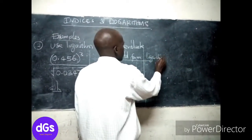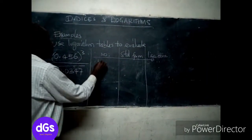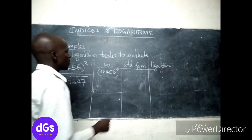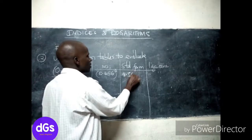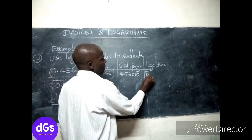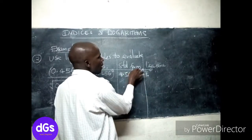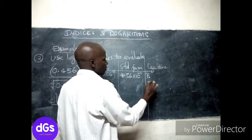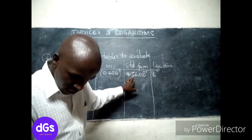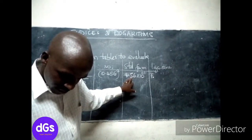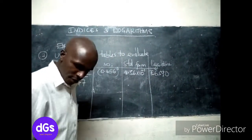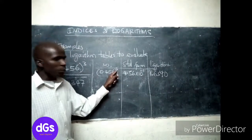The first number is 0.456, and we want it to be cubed. Let's express this in standard form: 4.56 times 10 to the power of negative one. This negative one gives us a bar one here. So we have the logarithm of 4.56, which from the tables is 0.6590.